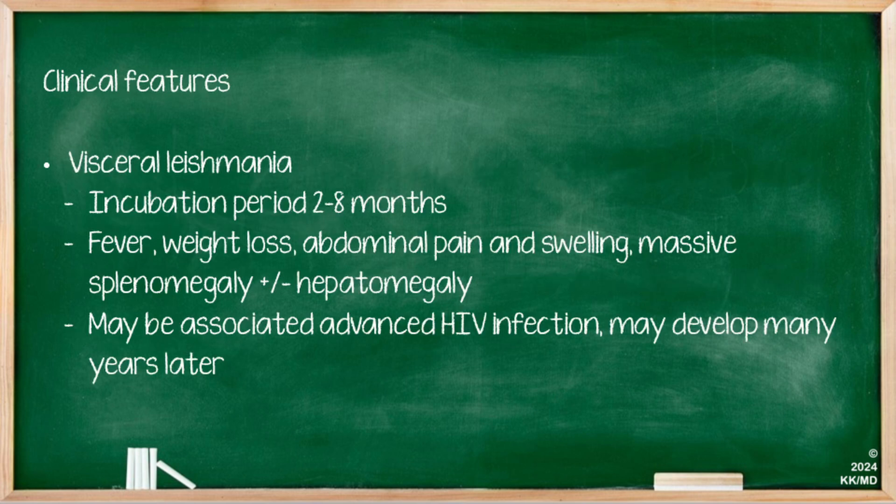Visceral leishmaniasis has an incubation period of two to eight months. It normally presents with fever, weight loss, abdominal pain and swelling, and massive splenomegaly or hepatomegaly. This may also be associated with advanced HIV infection, which may develop many years later.